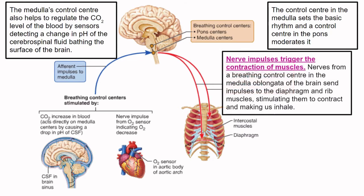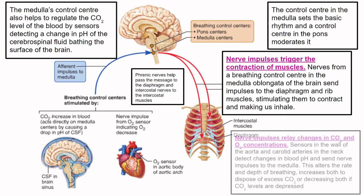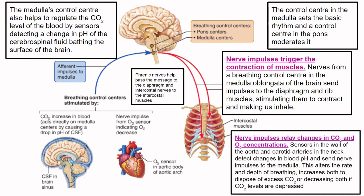You also need to be aware of the interaction of the nervous system with the ventilation system. There are a set of nerves known as the phrenic nerves which help to pass messages to the diaphragm and the intercostal muscles, allowing them to contract and stimulating inhalation when needed.